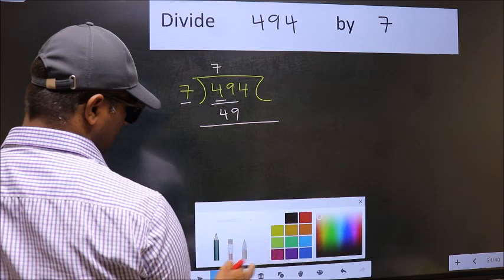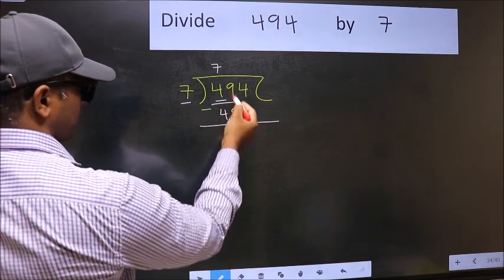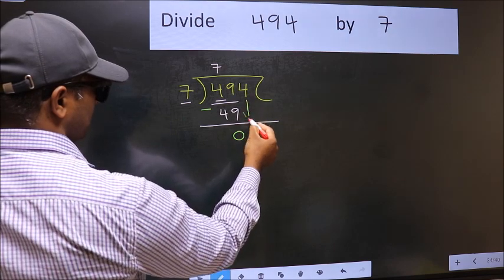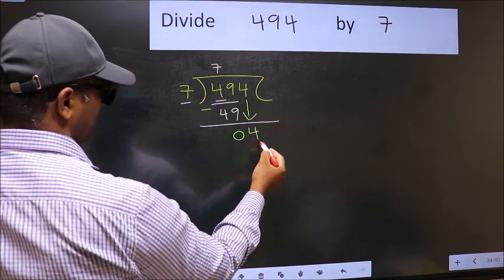Now you should subtract. 49 minus 49 is 0. After this, bring down the beside number, so 4 down.